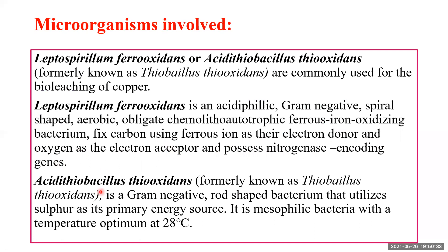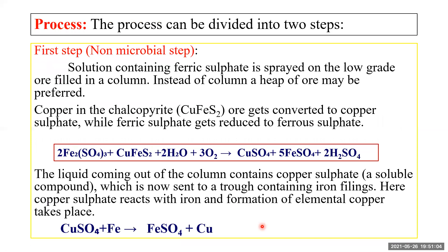The second organism, Acidithiobacillus thiooxidans, formerly called Thiobacillus thiooxidans, is a gram-negative, rod-shaped bacterium which utilizes sulfur as its primary energy source. It is a mesophilic bacterium with an optimum temperature of 28°C. Both bacteria can be used for oxidizing ferrous iron into ferric iron — converting Fe²⁺ into Fe³⁺.